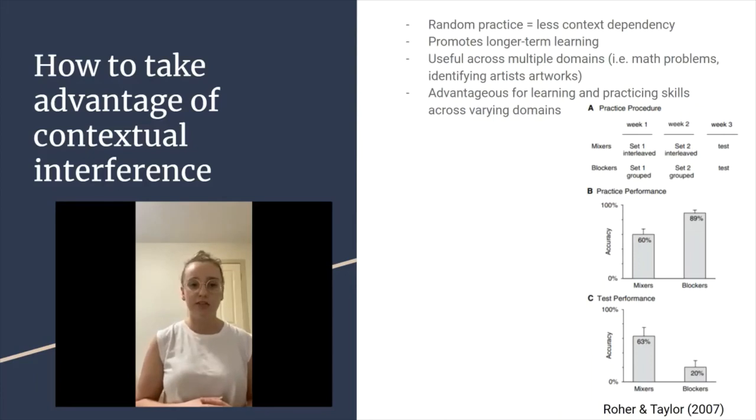The use of contextual interference has found to be successful across varying domains. For example, in 2007, Rohrer and Taylor found that using random practice with math problems was more beneficial for performance than grouping them together by problem type, as is currently commonly done in textbooks. For example, all division questions grouped together.